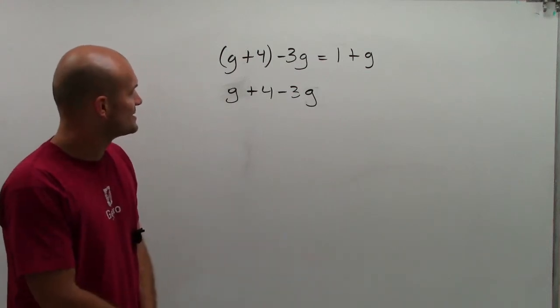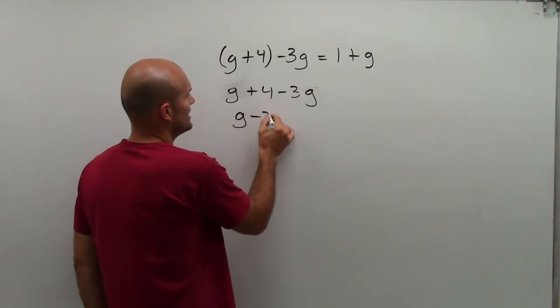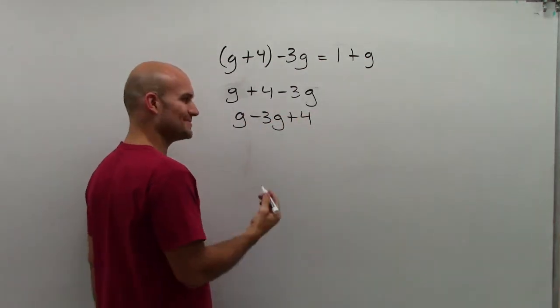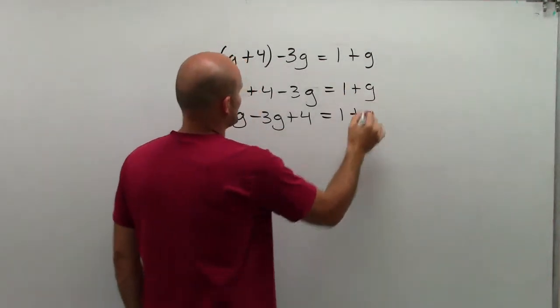When I take a look at this, I can use associative property to rewrite this. So it's g minus 3g plus 4 equals 1 plus g, which I can't do anything on the right side.